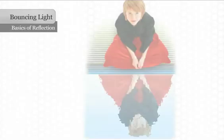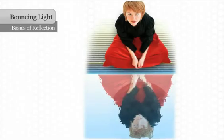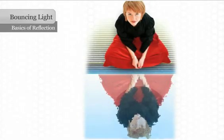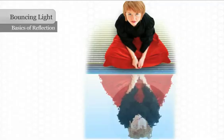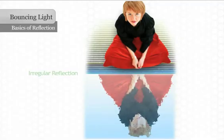An image can get fuzzy when reflected off a surface that is not flat, such as a pond or lake that has waves. The fuzzy image that results is called an irregular reflection. In an irregular reflection, light scatters or bounces in many different directions, and the image is not as clear.